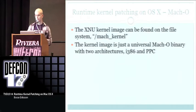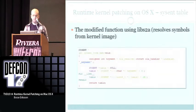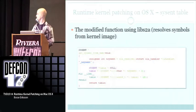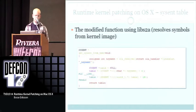The kernel is a universal Mach-O binary with two architectures: i386 and PPC. You can parse the file format pretty easily. I have tools for that I'll share later. The modified function is called S2A resolve — a library I put together to resolve symbols from the kernel. We just resolve it from the kernel on disk without changing anything.